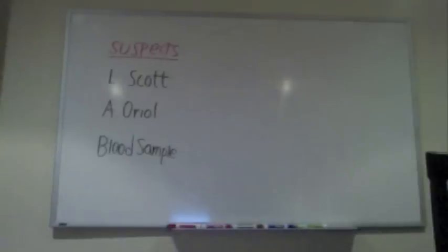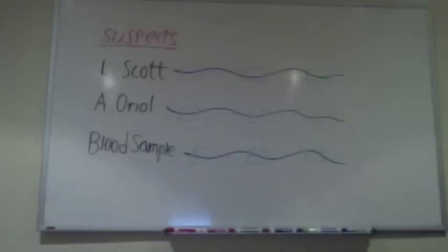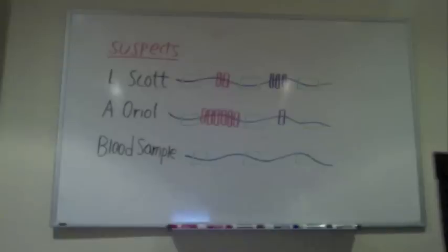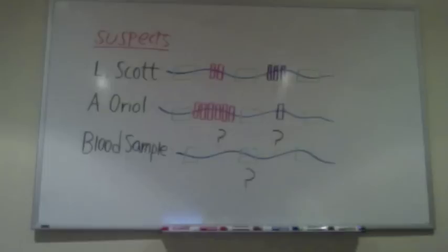Let's take a look at our suspects again. By looking at the short tandem repeats on each person's DNA, we can establish that each person has varying DNA that identifies them as an individual. But what about the blood sample? By taking a closer look, we can figure out whose DNA the blood sample resembles.